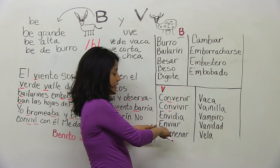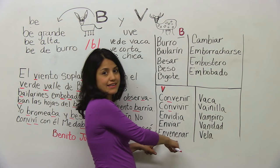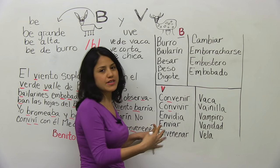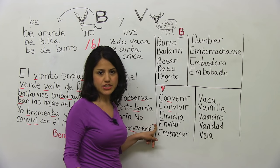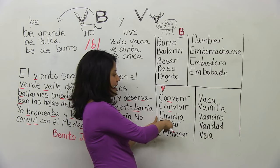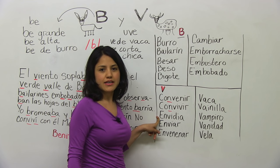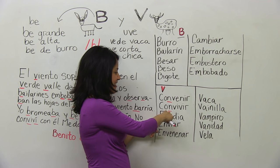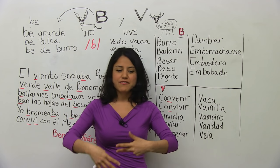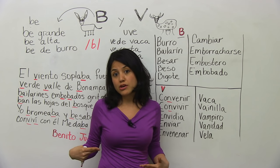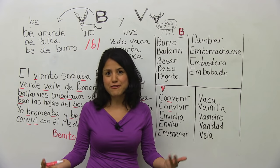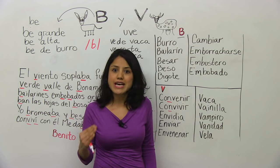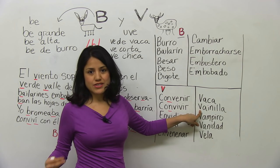More examples: convivir, envidia — envy — enviar — to send, for example 'envíame un mensaje de texto,' send me a text message — and envenenar, to poison someone. Convivir means to get together with friends. And convenir — convenient — I don't say convenir with a hard V, I say convenir, which sounds softer than when you pronounce it at the start of a word.